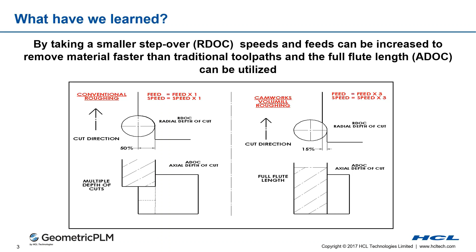Basically, if we do conventional roughing, the cutter's material contact is almost 50 to 60%. Because the contact is more, you have to reduce the feed. On the left-hand side — the conventional path — the contact is more, and you need multiple depth of cuts. If you don't have a good depth of cut, the cutter gets loaded.